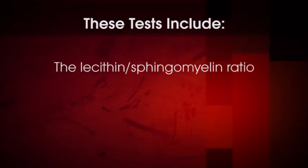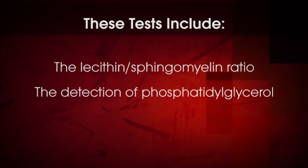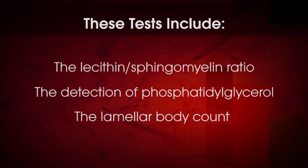Clinical tests are available that assess the maturity of fetal lungs. These tests are performed on amniotic fluid and determine if a sufficient amount of pulmonary surfactant is present to prevent the development of RDS. Between 1971 and 1988, several fetal lung maturity tests, or FLM tests, were developed, but only three are presently in clinical use. These include the lecithin to sphingomyelin ratio, the detection of phosphatidylglycerol, and the lamellar body count.